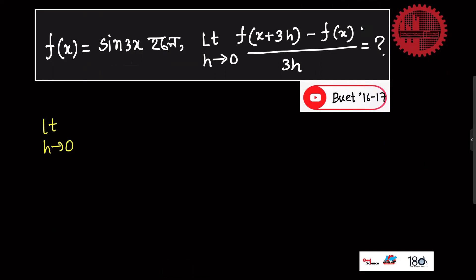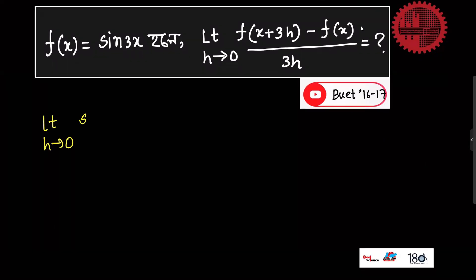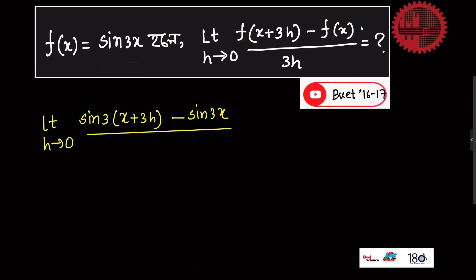Let me tell you, f of x equals to sin 3x. So x plus 3h gives sin 3 into x plus 3h, which equals sin 3x plus 9h. Minus f of x equals sin 3x, all divided by 3h.